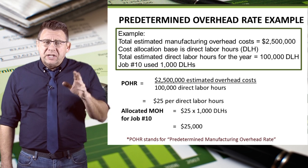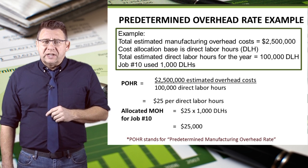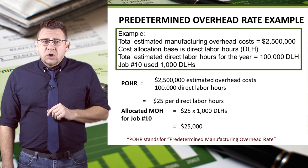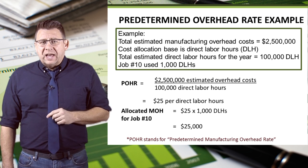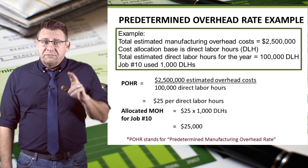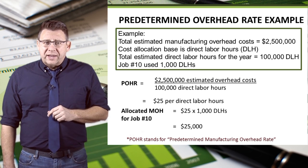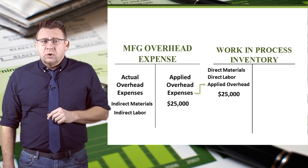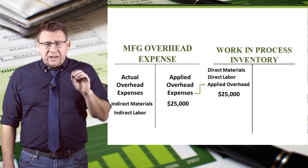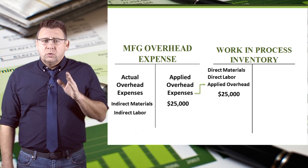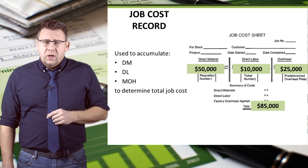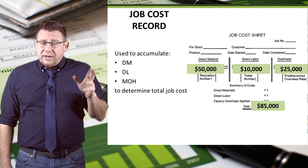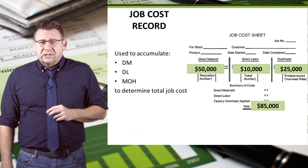Let's assume that Job 10 uses 1,000 hours of direct labor to complete. So we would apply $25,000 of manufacturing overhead to that job. That $25,000 would be moved from the manufacturing overhead account to WIP. On the job cost record, manufacturing overhead would be applied for a total of $25,000.